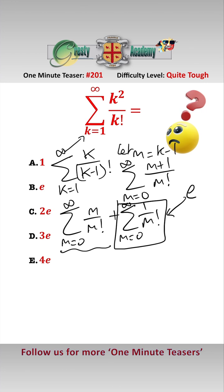The first term m equals 0 would be 0 over 0 factorial, which is 0, so we can actually replace that 0 with 1 without changing anything, and so that gives us the sum between m equals 1 and infinity of m over m factorial. Again,